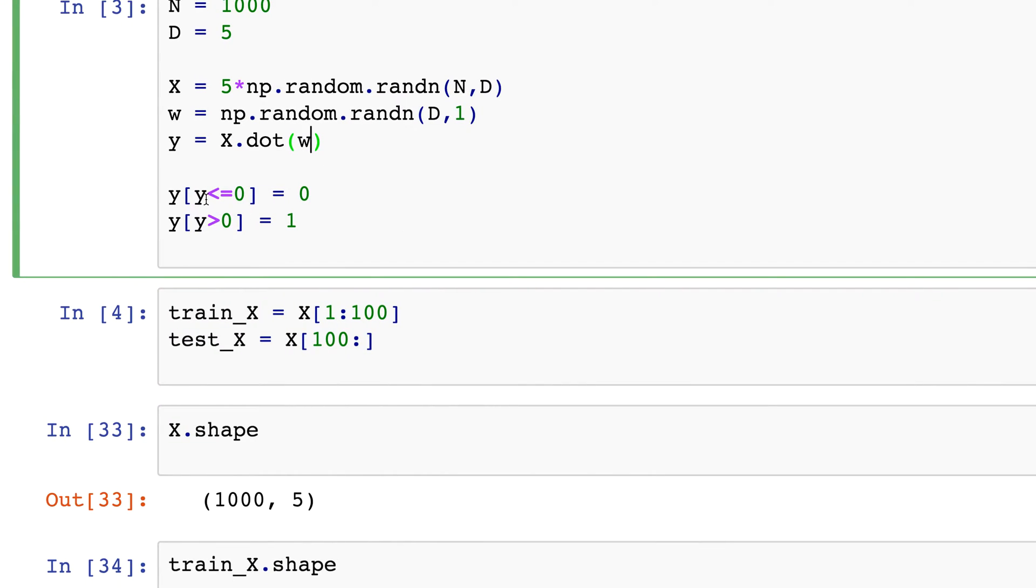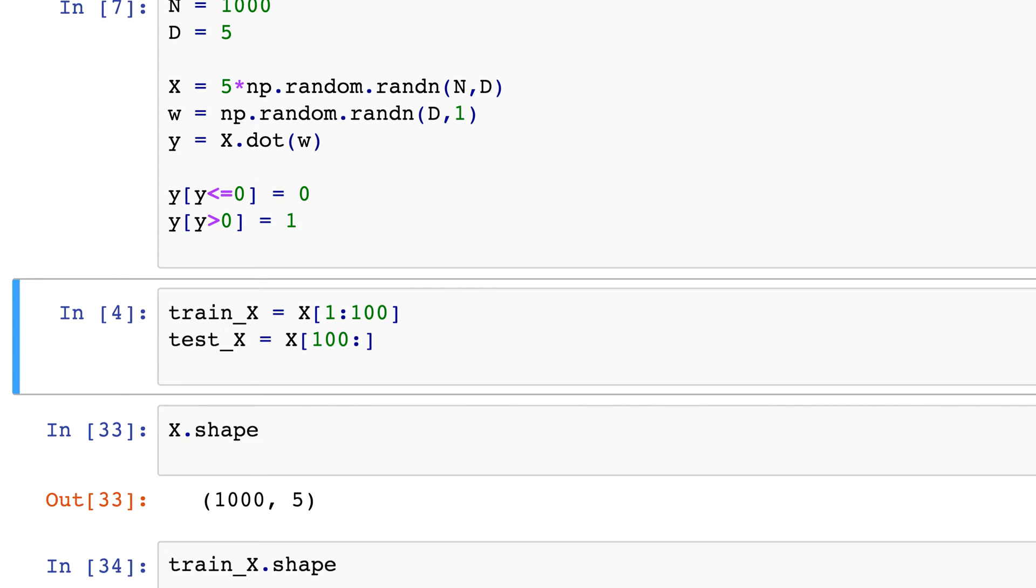Right, so y is exactly the same as linear regression. I'm going to matrix multiply that with w. Now the main trick over here is I'm going to say if y is negative, I set that to 0. If y is positive, I set that to 1.